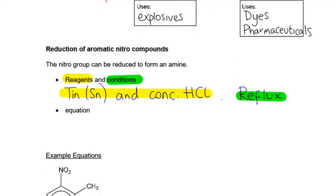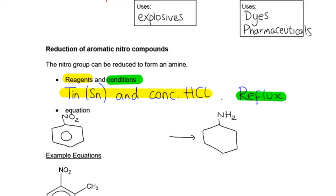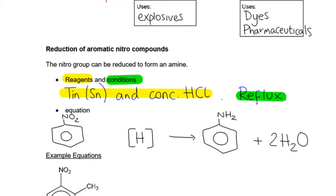Our equation is going to take our aromatic nitro compound and turn it into an aromatic amine. Because this is a reduction reaction and it's organic, we can use [H] in square brackets to represent reducing agents. We need to balance that — what happens to those oxygens? They combine with hydrogens to make water, and there were two oxygens, so that gives two water molecules. Counting up the hydrogens: there are four in the water and two on the amine, so that's six altogether.